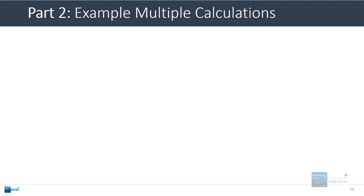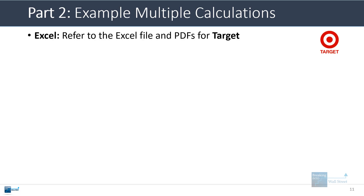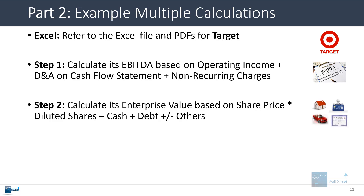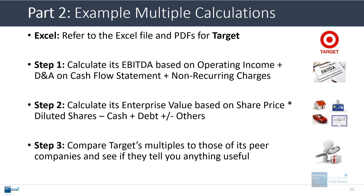Let's go through a few calculations using Target as an example. You can get the Excel file and PDFs by following the link below the video. Step one: calculate EBITDA based on operating income, depreciation and amortization from the cash flow statement, and add back any non-recurring charges. Step two: calculate enterprise value by starting with equity value — share price times diluted shares — then subtract cash and add debt. Then you compare Target's multiples to those of its peer companies.